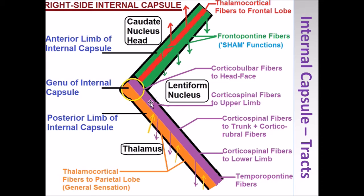The fibers in the anterior part of the lateral portion of the posterior limb of the internal capsule are the corticospinal fibers to the upper limb. Further posteriorly, the fibers are the corticospinal tract fibers to the trunk, and it also carries the corticorubral fibers — that is, from the cortex to the red nucleus of the midbrain. Going further posteriorly, these are the corticospinal tract fibers which go to the lower motor neurons of the lower limb. And finally, at the posteriormost tip, we have certain fibers which come from the temporal lobe to the pontine nuclei — they are part of the frontopontine tract, referred to as the temporopontine fibers. So this whole segment is the corticospinal tract: fibers to the upper limb, to the trunk, to the lower limb.